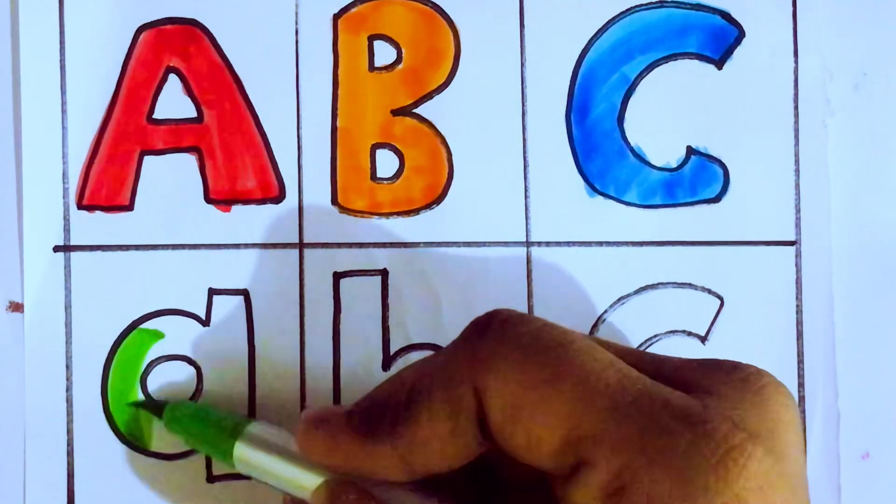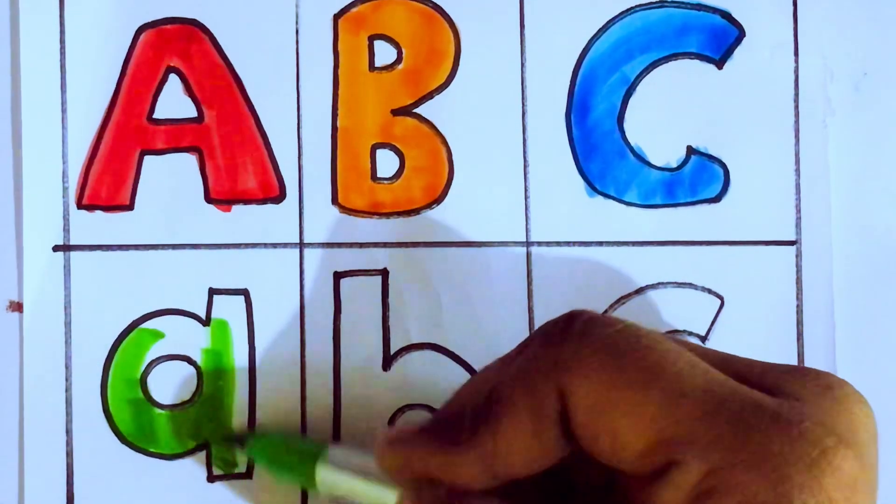Green color. Small a. Which letter kids? Small a. A for apple.